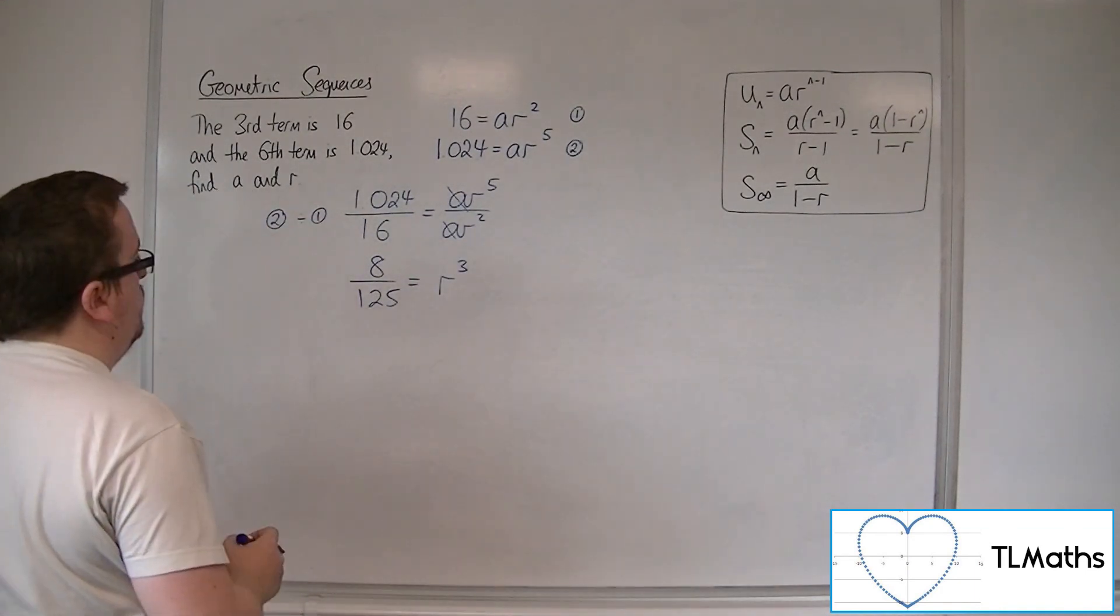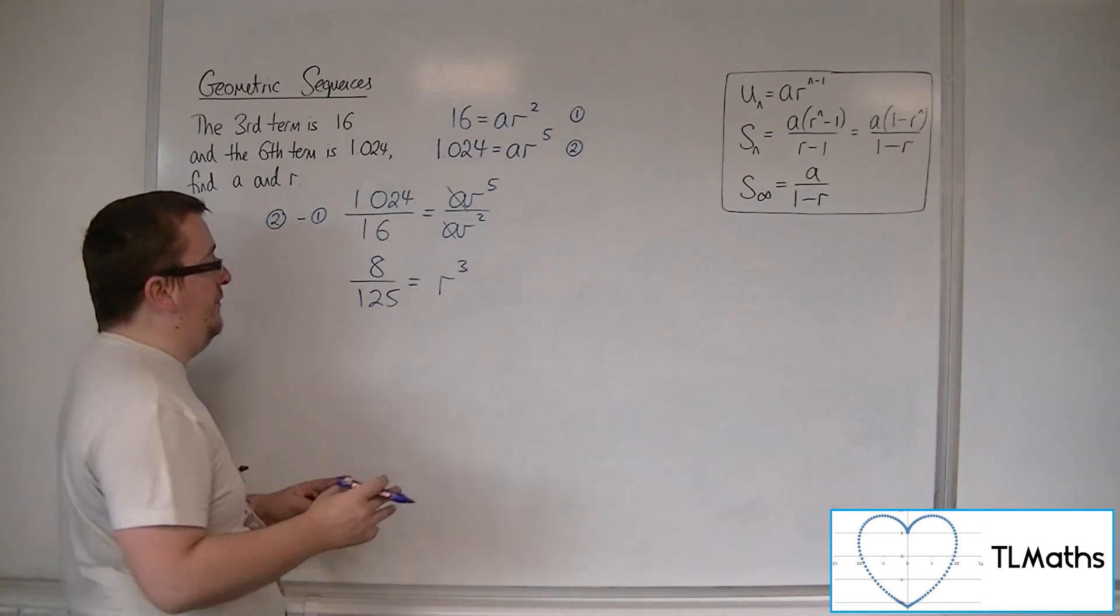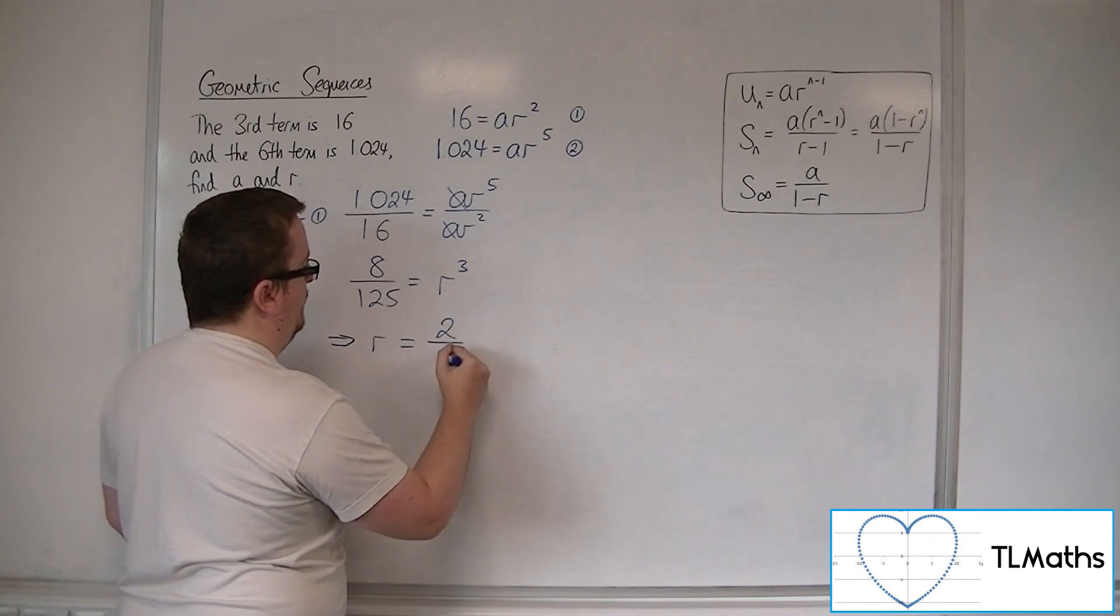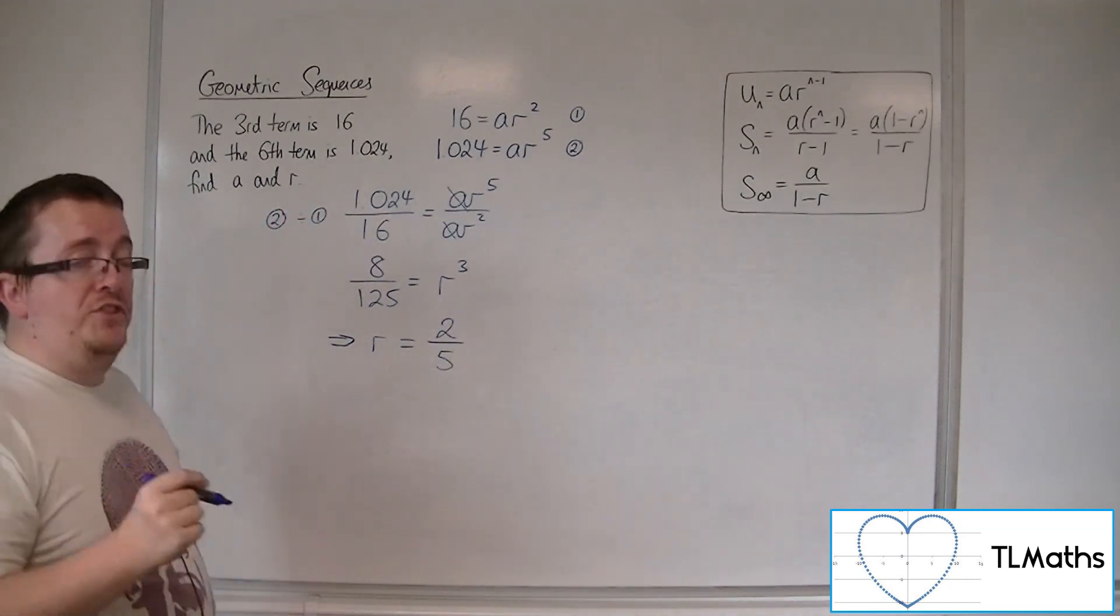So if I cube root both sides of this equation, I can get r, which is going to be 2 over 5. So r is 2 fifths.